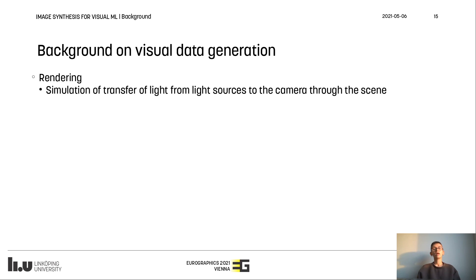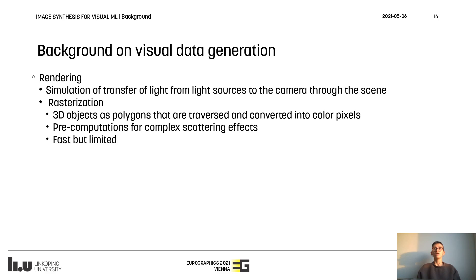Rendering is the second component of the visual data generation pipeline. By rendering, we mean the light transport simulation in the environment and how the simulated sensors capture the virtual world. Rendering and sensor simulation can be broadly divided into two main techniques: rasterization and ray or path tracing. In rasterization, the 3D objects are represented by polygons, usually triangles, that are traversed on the screen and converted into color pixels. In order to achieve realistic rendering results, there are needed precomputations for complex scattering effects or global illumination.